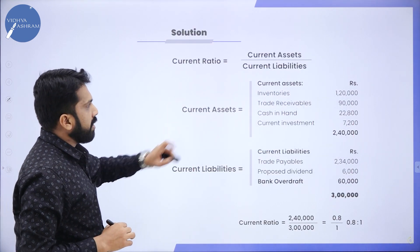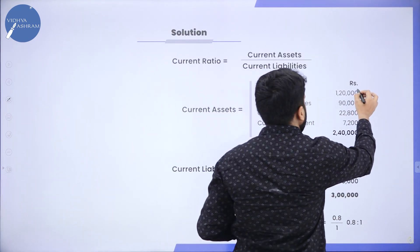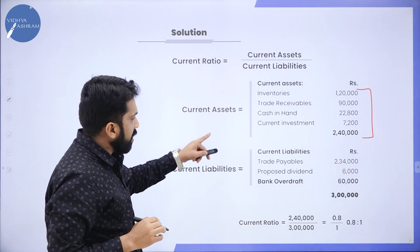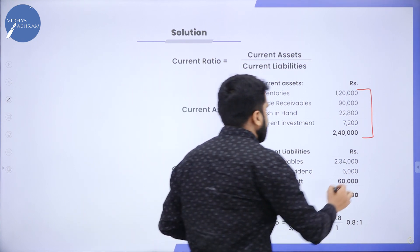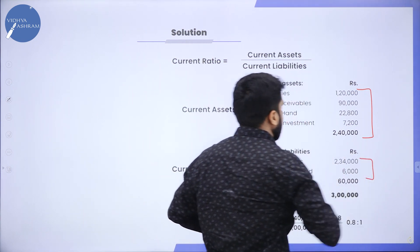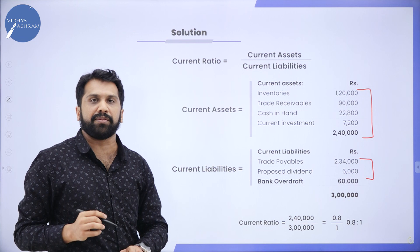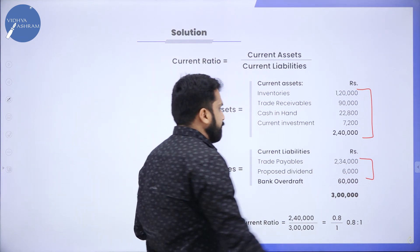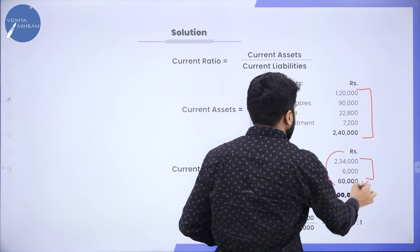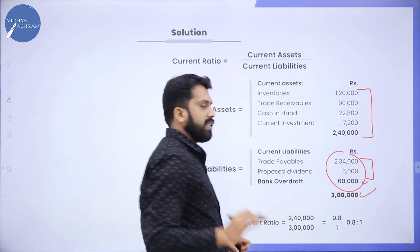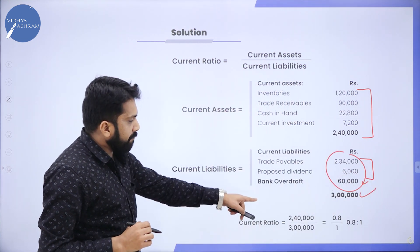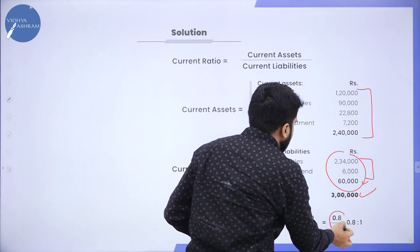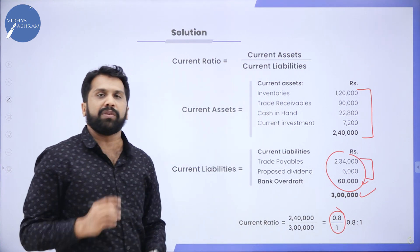Now for the solution. Total Current Asset as calculated is 2,40,000. Current Liability as calculated is 60,000. Adding all three Current Liability items together gives 3,00,000. So 2,40,000 divided by 3,00,000 gives an answer of 0.8 divided by 1.